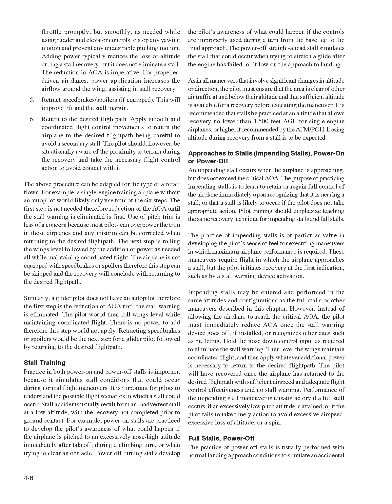The above procedure can be adapted for the type of aircraft flown. For example, a single-engine training airplane without an autopilot would likely only use four of the six steps — the first step is not needed, so reduction of AOA until the stall warning is eliminated comes first. Use of pitch trim is less of a concern because most pilots can overpower the trim in these airplanes. A glider pilot does not have an autopilot, so the first step is reduction of AOA until the stall warning is eliminated. There is no power to add, so that step would not apply. Retracting speed brakes or spoilers would be the next applicable step for a glider pilot, followed by returning to the desired flight path.